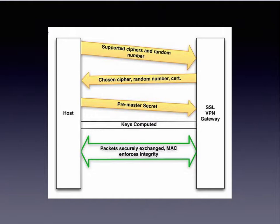The server sends back its identification in the form of a digital certificate, which usually contains the server name, the trusted certificate authority, and the server's public encryption key. The client may contact the CA to confirm the validity of the certificate. To generate session keys, the client encrypts a random number with the server's public key and sends it to the server — only the server can decrypt it with its private key.